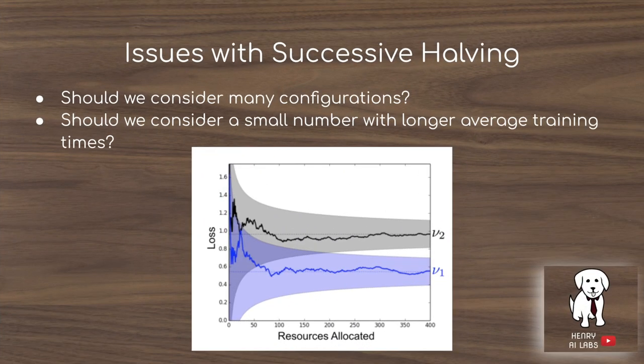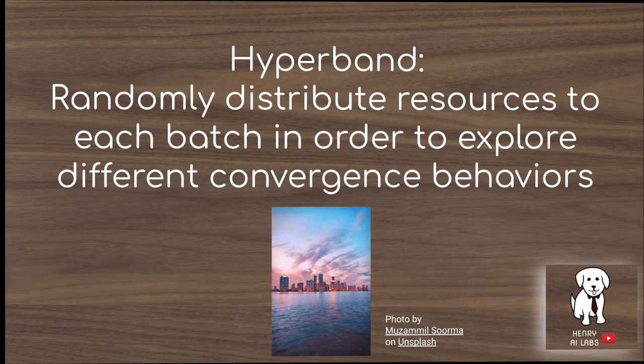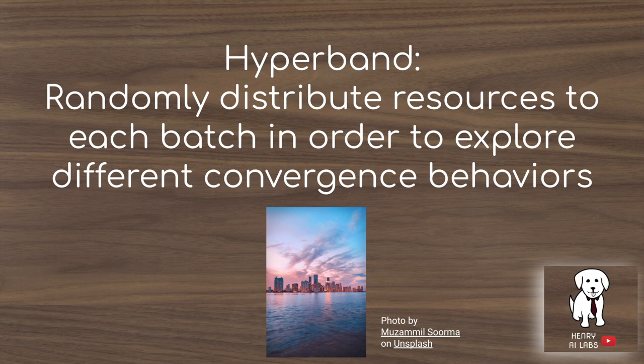The issues with successive halving are: how many configurations should you consider, and the uniform allocation doesn't really explore the different convergence behaviors configurations can have. So Hyperband says to randomly distribute the resources rather than uniformly distribute them. This allows you to explore the different convergent behaviors that could be inherent in each hyperparameter configuration.